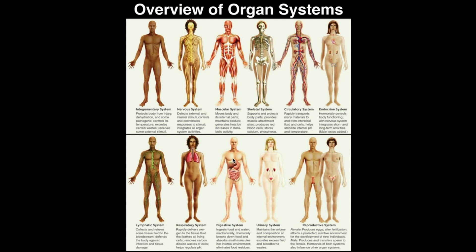The digestive system includes organs such as the esophagus, the stomach, the liver, and all the intestines. The digestive system is involved in breaking nutrients down that we eat so that they can be absorbed into the bloodstream and utilized by all the tissues of the body.